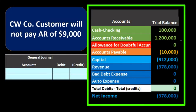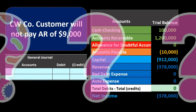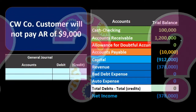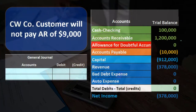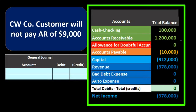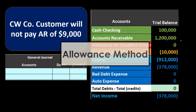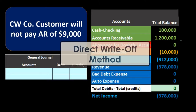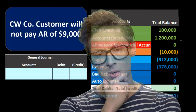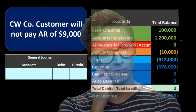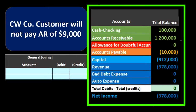When considering whether to use the allowance method or direct write-off method, we want to consider: do we have to use an allowance method because we need financial statements in accordance with generally accepted accounting principles, or are we able to choose? If we choose the direct write-off method, it's probably because we're thinking that the receivables that will be written off are not significant — in other words, they're non-material to decision making.